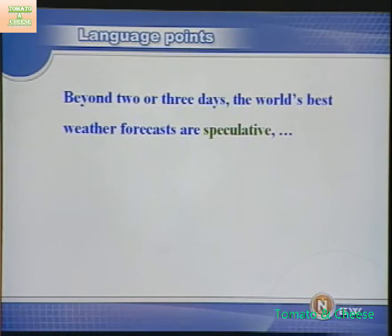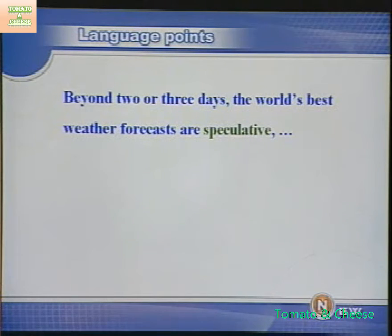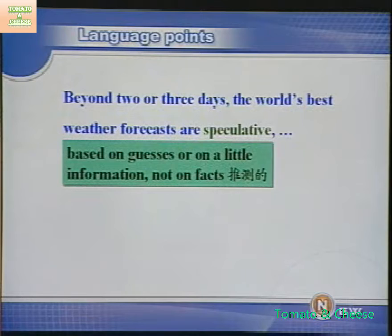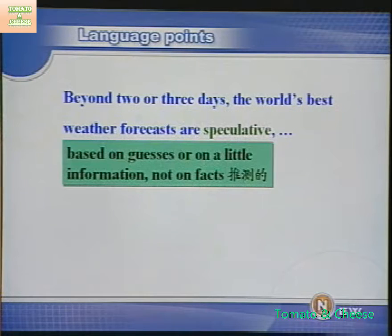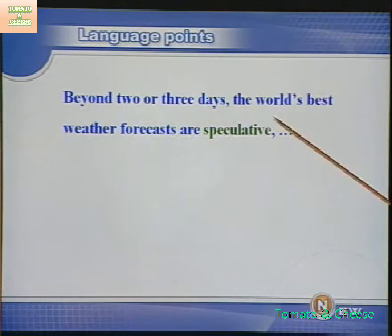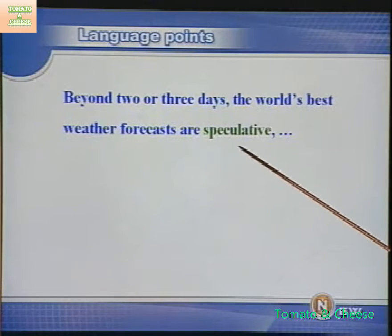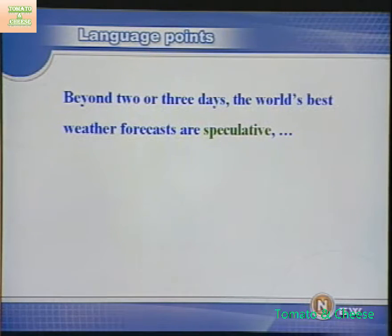下一个语言点：Beyond two or three days, the world's best weather forecasts are speculative. "Speculative"意思是based on guesses or on little information, not on facts——推测的。这句话的含义是没有绝对准确的天气预报。